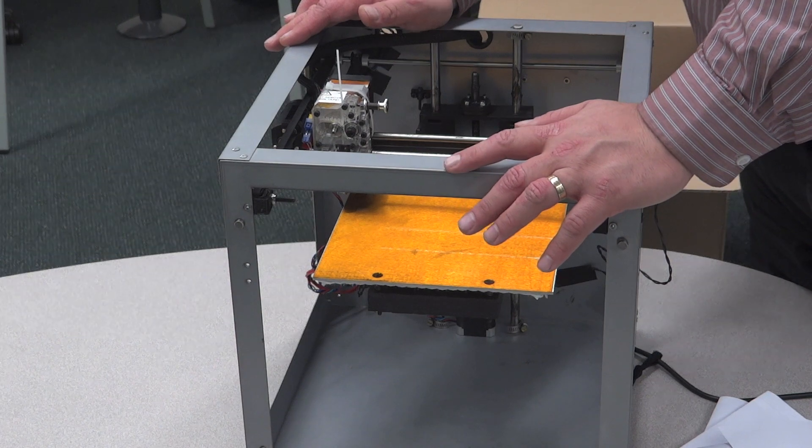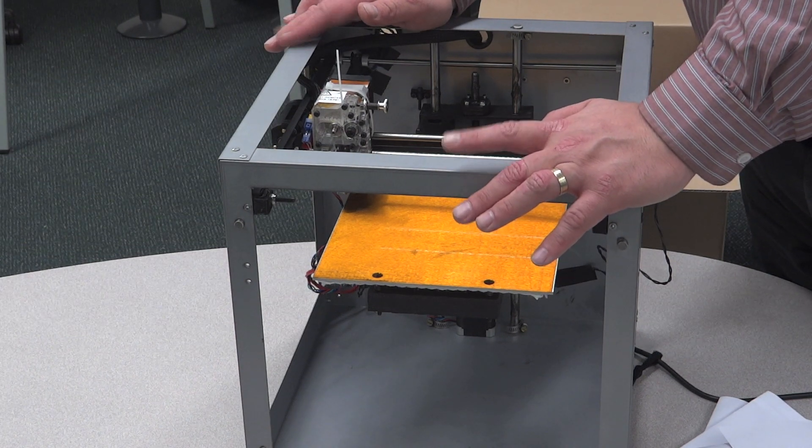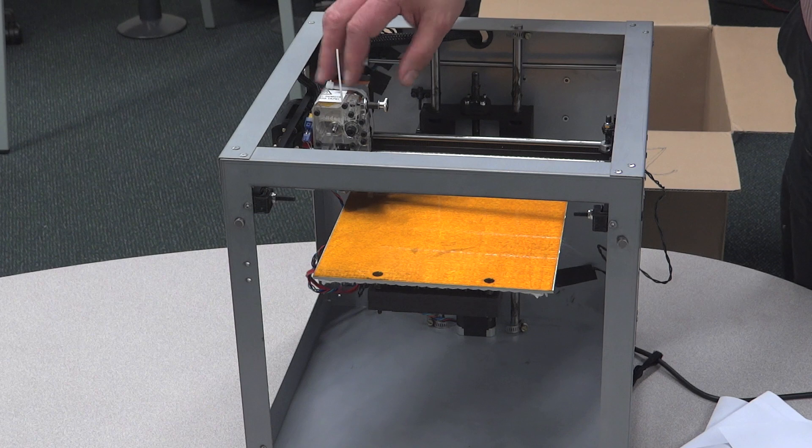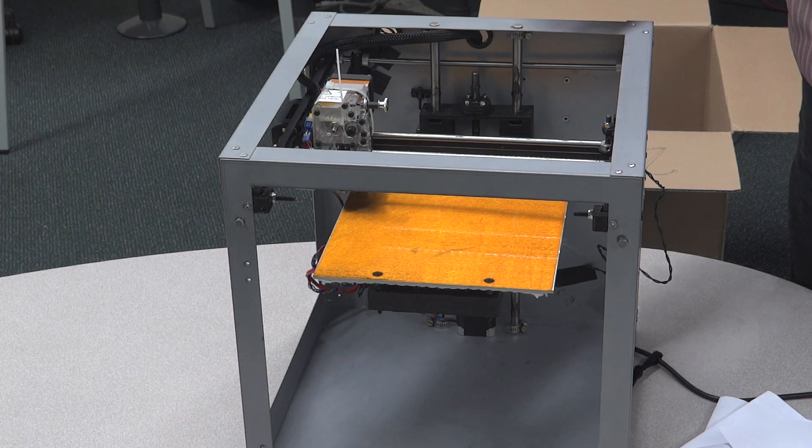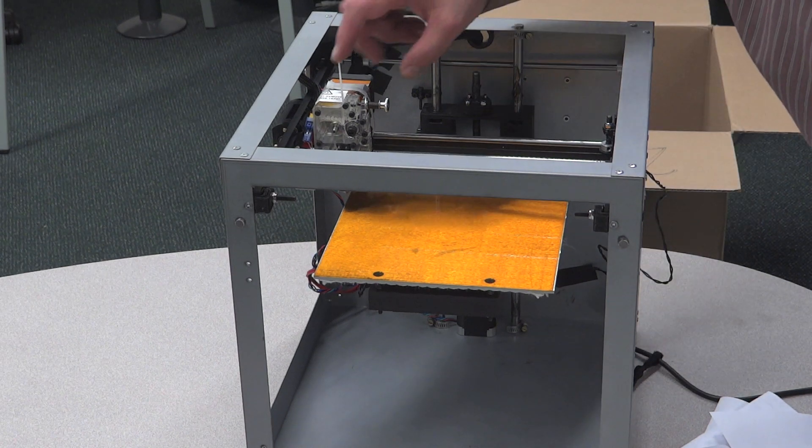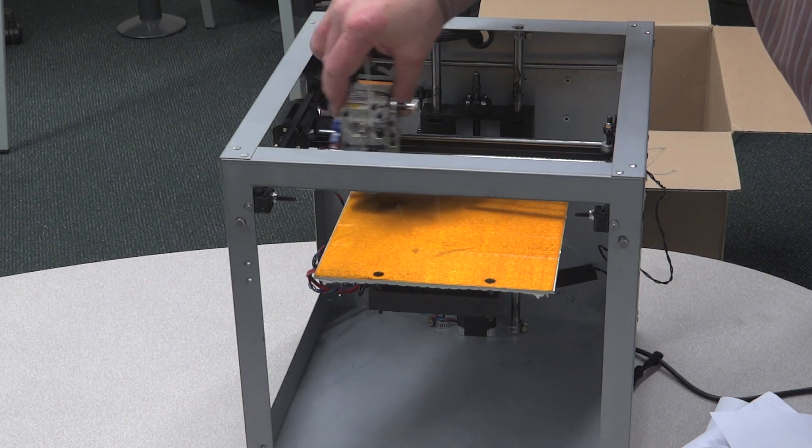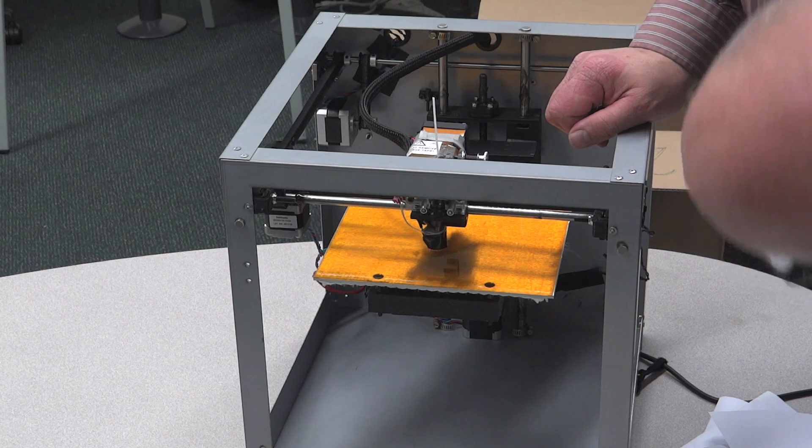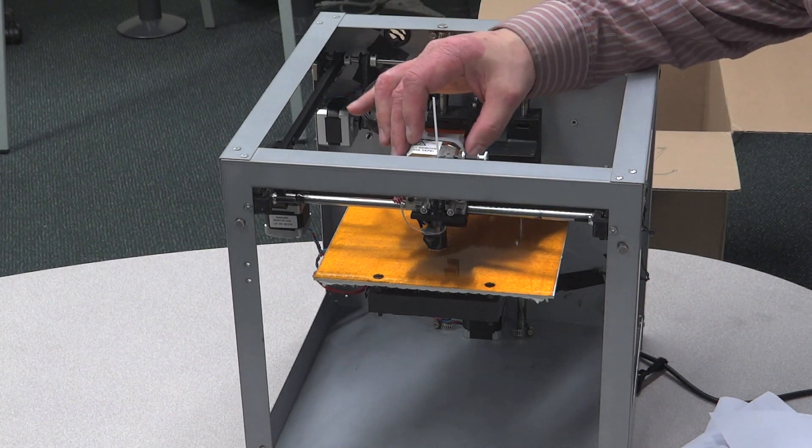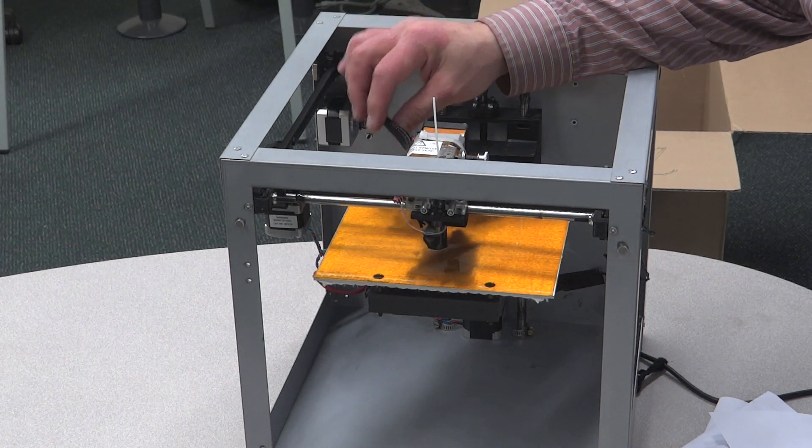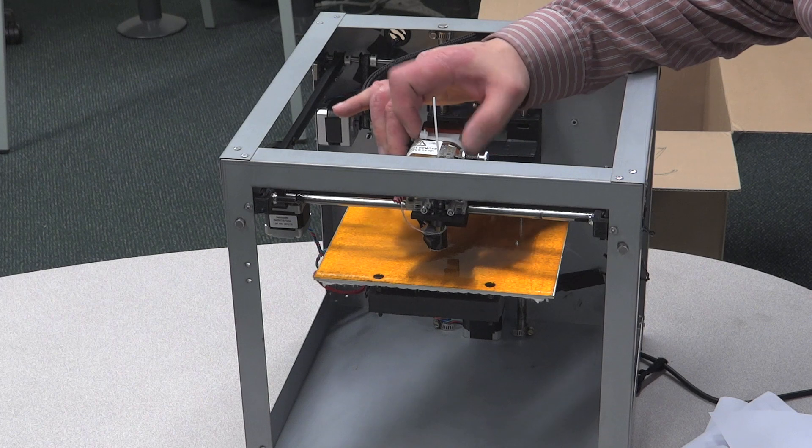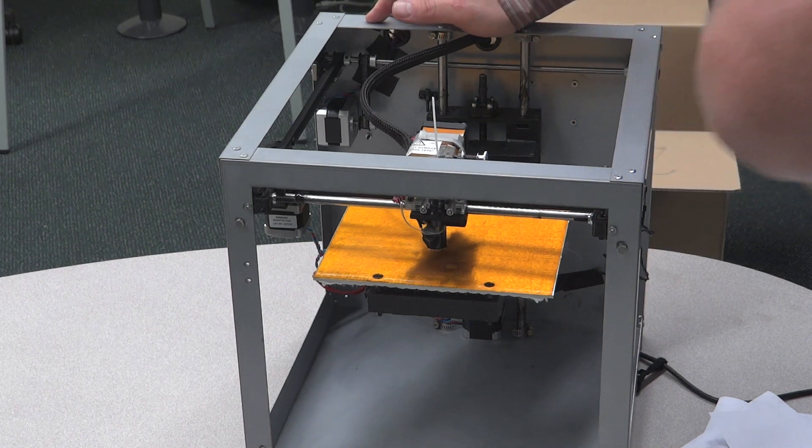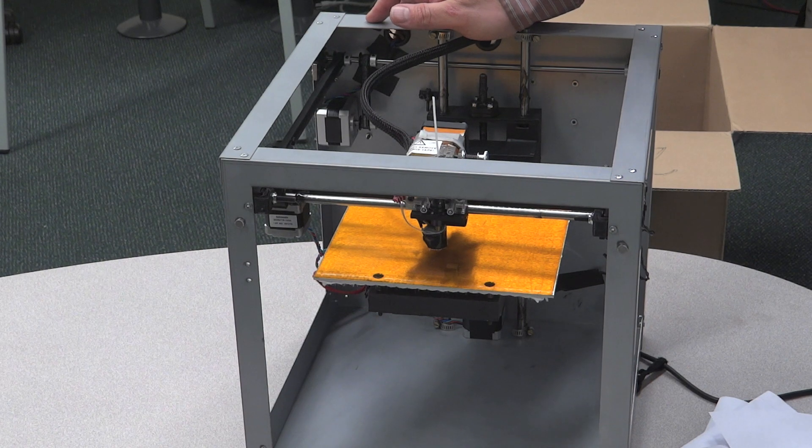For those who've had SolidDoodle 2s, it has the same general configuration. The build platform translates along the Z axis, and the XY is done by the extruder carriage. It looks like a very similar setup as before. There are sandwiched acrylic plates for the extruder. Very similar hot end as before. Now, there's a zip tie that is holding on the umbilical cord to the exterior motor. But otherwise, it's very similar to the SolidDoodle 2. At least from the inside.